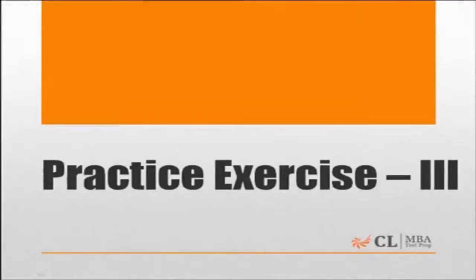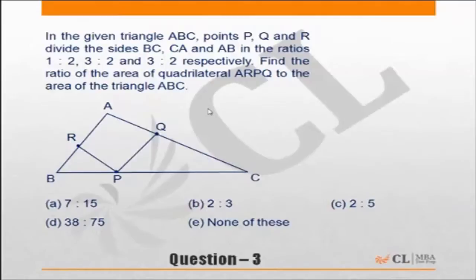Practice exercise 3. In the given triangle ABC, points P, Q, and R divide the sides BC in ratio 1 is to 2, CA in ratio 3 is to 2, and AB in ratio 3 is to 2.